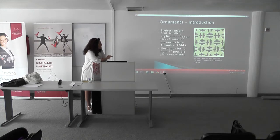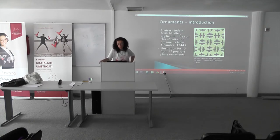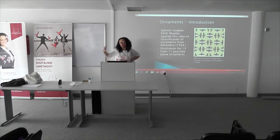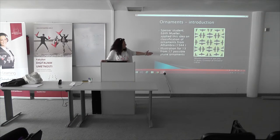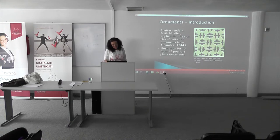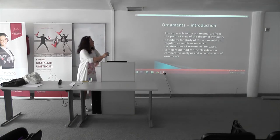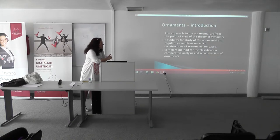There is one example of the type P4G. There is also Owen Jones' Grammar of Ornament, which was published in the 19th century — actually 1856. We have two approaches to ornaments: from the point of view of the theory of symmetry, and from the point of view of the history of art. We propose to mix these two things in order to get the best possible results in classification.